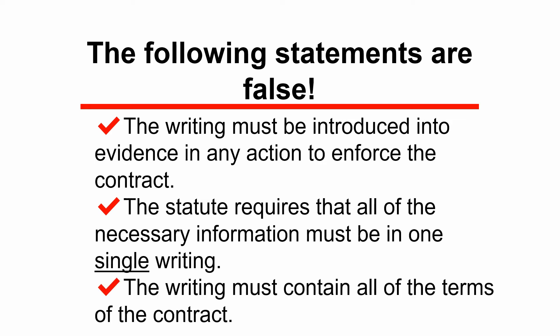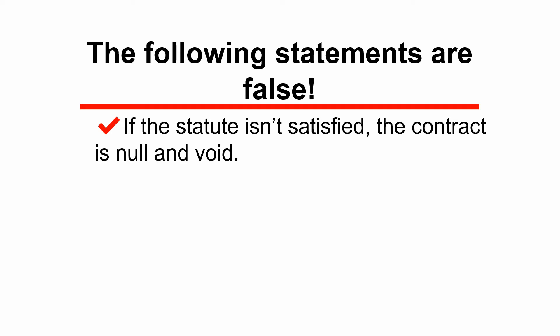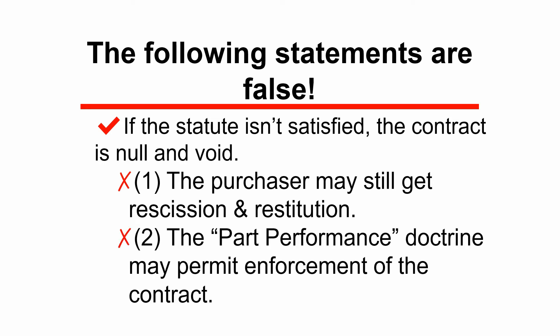Does the writing have to contain all the terms of the contract? Not at all. Only a minimal list of terms has to be shown by the writing; the rest of the terms may be part of an oral agreement. It's also widely assumed that if the statute isn't satisfied, the contract is null and void — but that isn't correct. The contract still has great significance even if the statute isn't satisfied. The purchaser may still get rescission of the contract and restitution of any earnest money paid. The other reason the contract isn't necessarily null and void is because of the part performance doctrine, which permits enforcement even with no writing whatsoever.